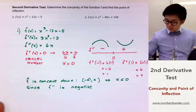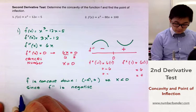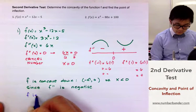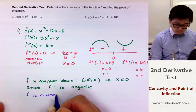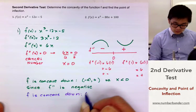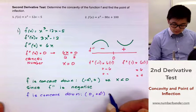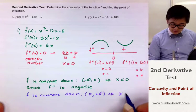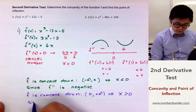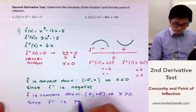And f is concave up on the interval 0 to positive infinity, or x greater than 0, since f double prime is positive there.